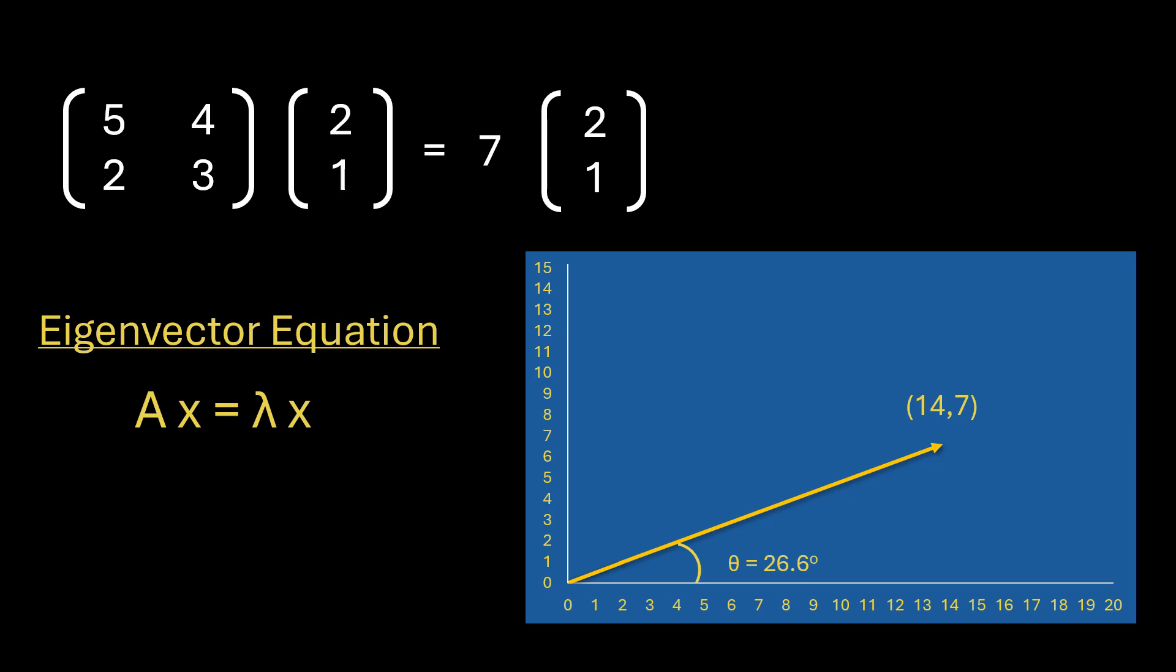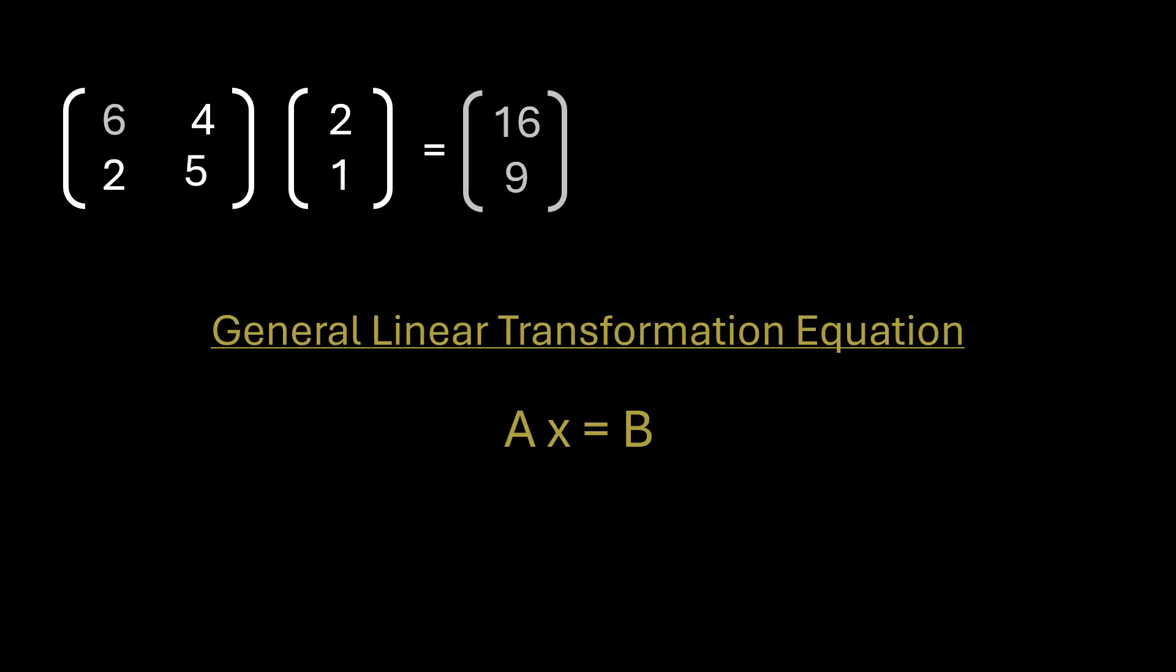And for this system where linear transformation matrix changes both the direction and scale of a vector then this eigenvector equation is no longer applicable. Instead a general linear transformation equation will be used which is Ax = B. In this equation there is no eigenvector and there is no eigenvalue or scaling factor.